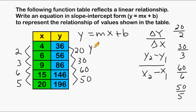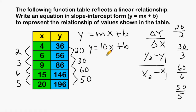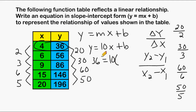So we're going to write y equals 10x plus b. Now what we have to do is figure out what our b value is. We have variables y and b, and a coefficient of 10. If we substitute any two of the variables with a value, we can solve for the one left over. So we're going to take one point from our function table and substitute it in for x and y. We'll plug in 36 for y and multiply 10 by the corresponding x value, which is 4, then solve for b.